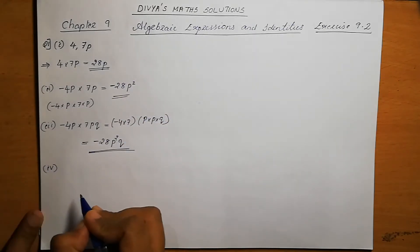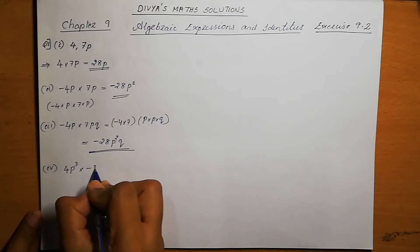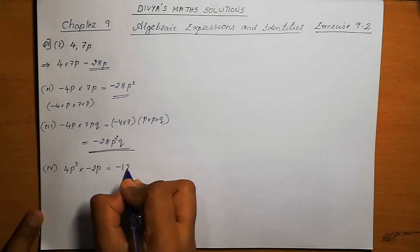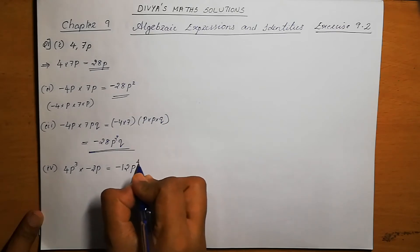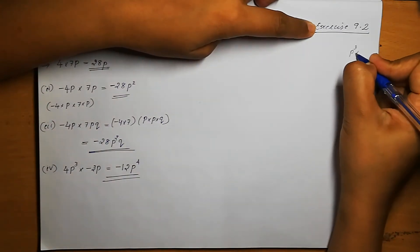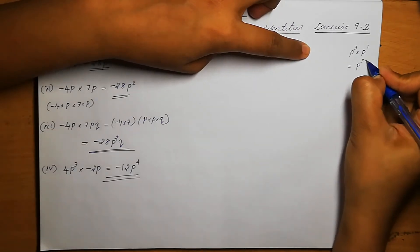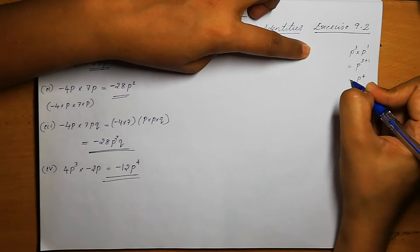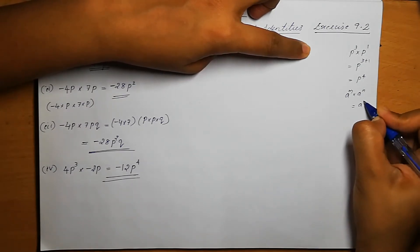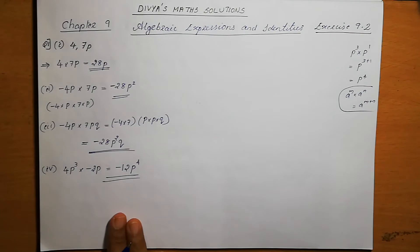Fourth one is 4p cube into minus 3p. So minus 3 into 4 is minus 12. Then p cube into p is p power 4 — this is in the form of a raised to m into a raised to n, where the base is the same. p means p power 1, so the powers add: 3 plus 1 is 4, giving p power 4. This property is from the exponent chapter: a raised to m into a raised to n equals a raised to m plus n.